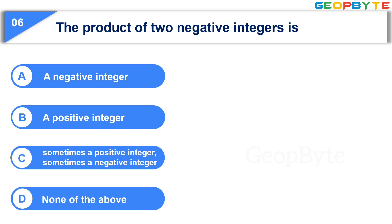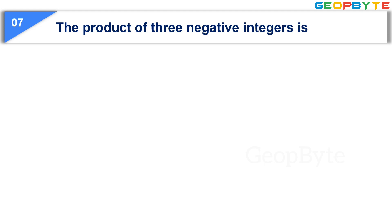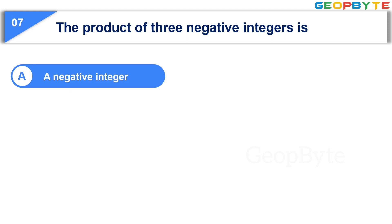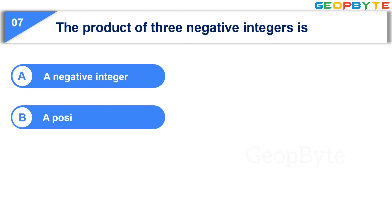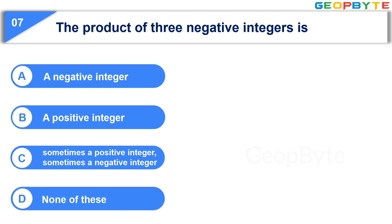Your time is up and the correct answer is Option B: a positive integer. Moving to the seventh question: The product of three negative integers is — Option A: a negative integer, Option B: a positive integer, Option C: sometimes a positive integer, sometimes a negative integer, Option D: none of these. Your time starts now.